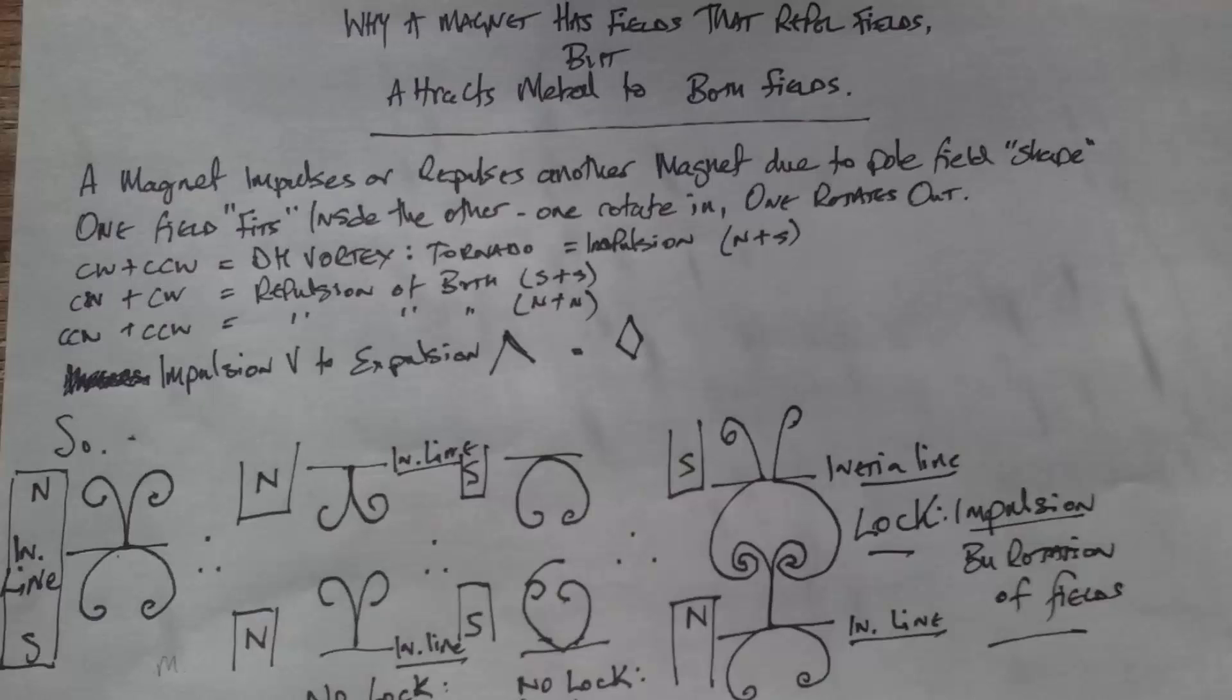This was on a video I did about why a magnet has fields that repel fields but attract metal to both ends. So if we go along the pictures, if you've been watching my videos you would know that I'd said that there was a lock.